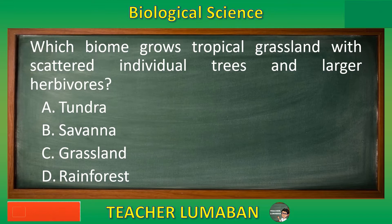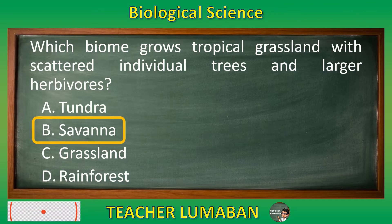The correct answer is Letter B: Savannah. The savannah biome grows tropical grassland with scattered individual trees and larger herbivores.